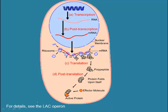Several steps in the gene expression process may be modulated, including transcription, RNA splicing, translation, and post-translational modification of a protein. Gene regulation gives the cell control over structure and function.